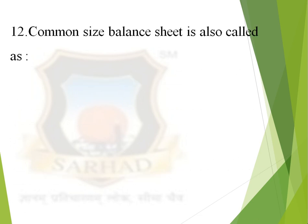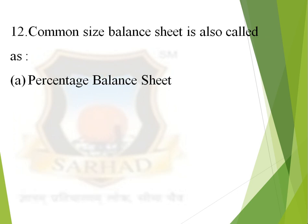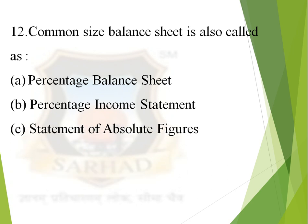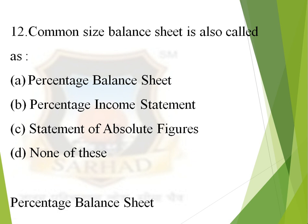Next question: common size balance sheet is also called as — first option, percentage balance sheet; second option, percentage income statement; third option, statement of absolute figures; and fourth option, none of these. The correct answer is percentage balance sheet. Common size balance sheet is also known as percentage balance sheet.